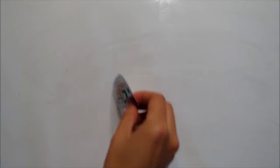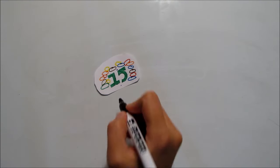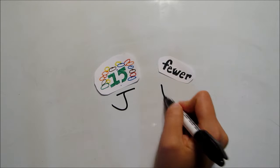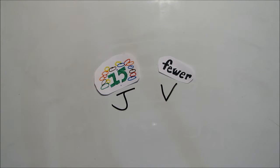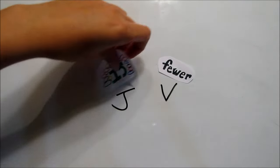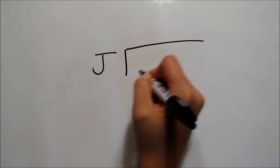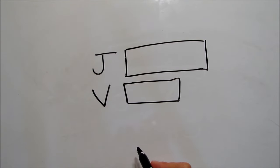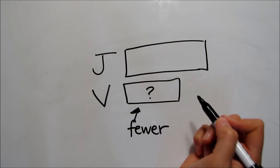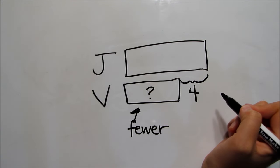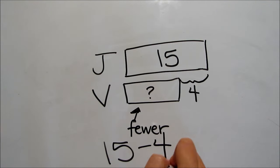In a comparison problem, we can be looking for different parts. If Juliana has 15 M&Ms, and Valerie has 4 fewer M&Ms than Juliana, we can find out how many Valerie has. We have Juliana's strip and Valerie's strip. Valerie's strip is shorter because she has fewer M&Ms. We don't know how many she has, but we know that this part is 4, and Juliana has 15. If we take away those 4 that Valerie doesn't have, we'll know that she has 11.